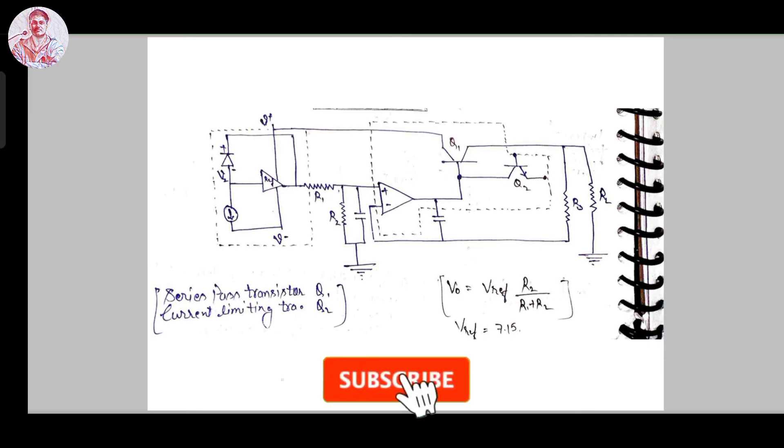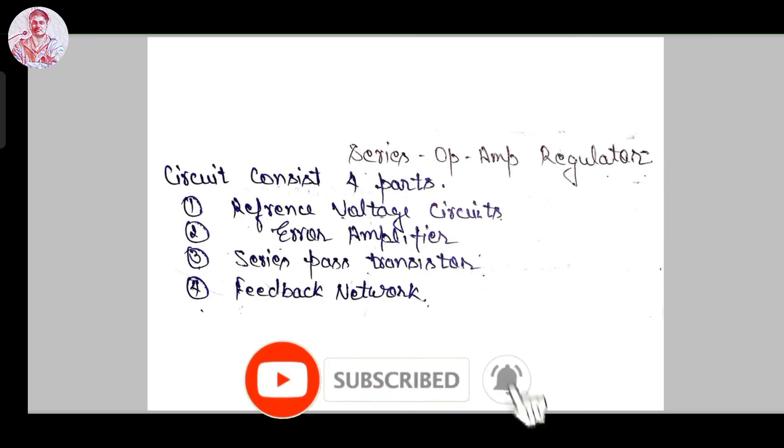The circuit can be easily derived by these four parts: first is reference voltage circuit, second is error amplifier circuit, third is series pass transistor circuit, and fourth is feedback network circuit. By using these four parts you can easily derive this IC723 voltage regulator circuit.